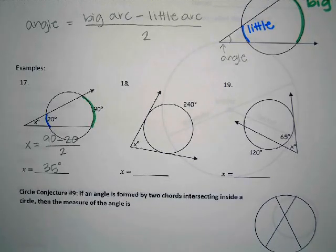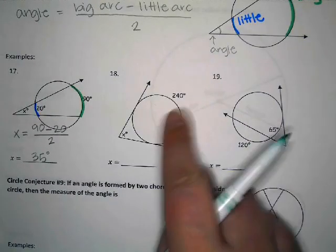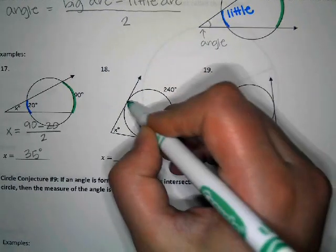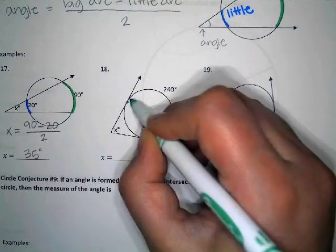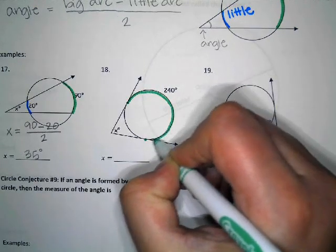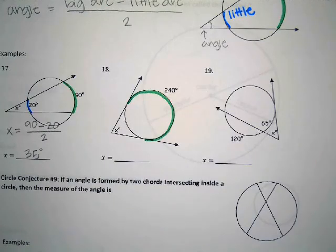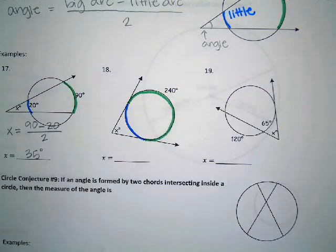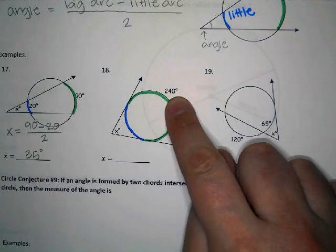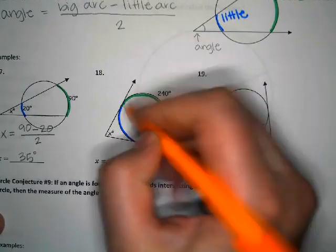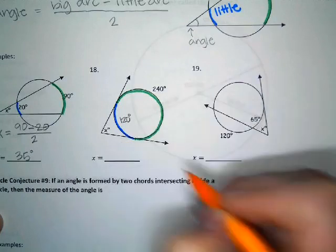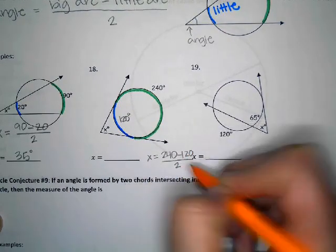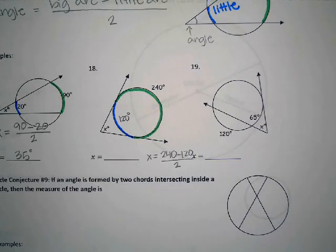In problem 18, you might think they only gave you one piece of information because there's only one number written down, but they actually hid a second piece. From here to here is the first arc - the big one - and that arc is 240 degrees. The little arc is the rest of the circle. If the big arc is 240, what's the little arc? 120 - it's the rest of the circle. So X equals 240 minus 120 divided by two. 120 divided by two is 60.